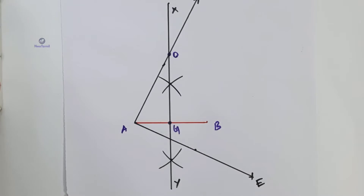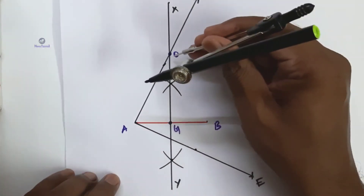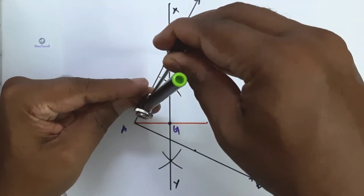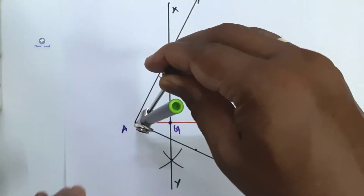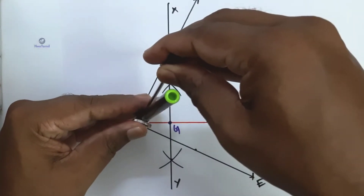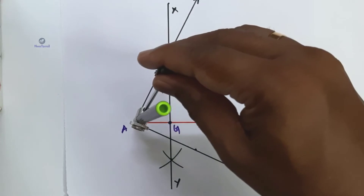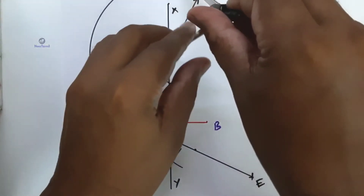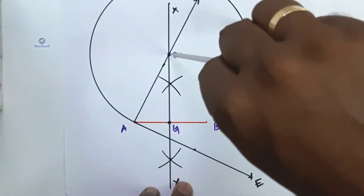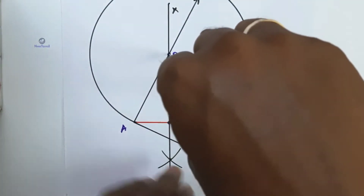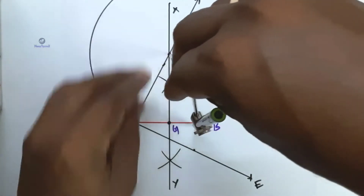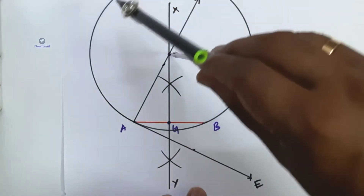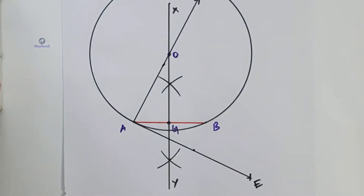With O as center and OA as radius, draw a circle. The circle must pass through A and B. Draw the circle with O as center and OA as radius.